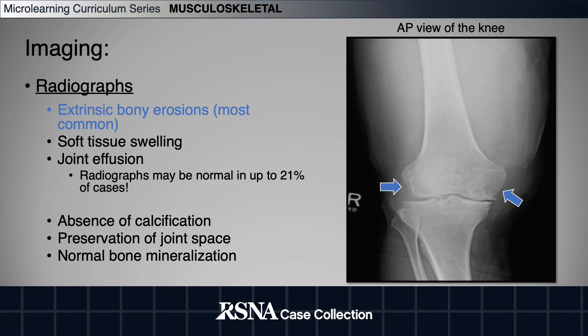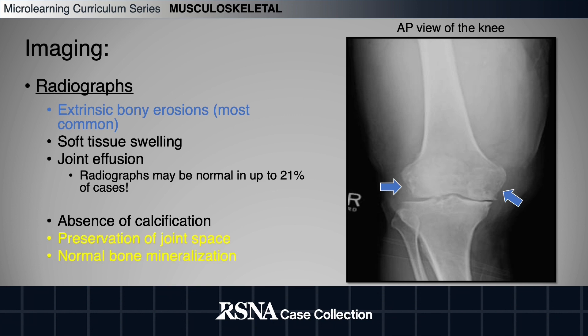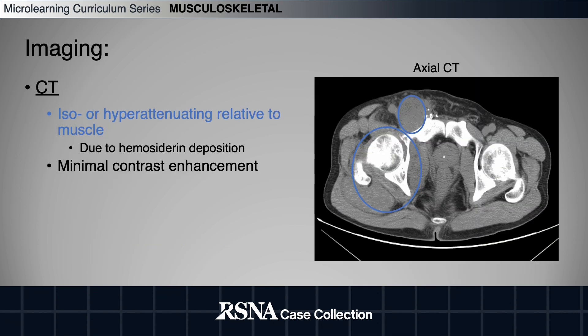Pertinent negatives include the absence of calcification, preservation of joint space, and normal bone mineralization. In fact, these final two features are important differentiators between TGCT and inflammatory arthritis.